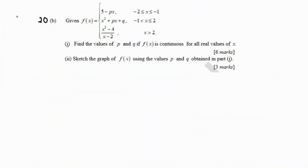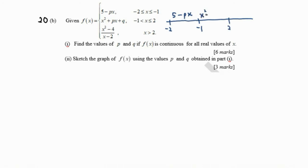We're going to discuss question 20b. Given that our function is a piecewise function, the first step is to draw the interval to illustrate the function, where negative 2 to negative 1 is the function 5 minus px, negative 1 to 2 is x squared plus px plus q, and x more than 2 is x squared minus 4 over x minus 2.